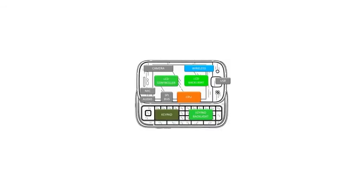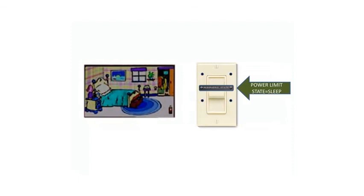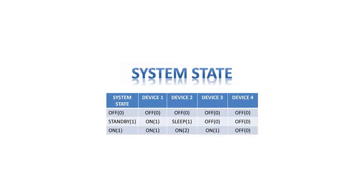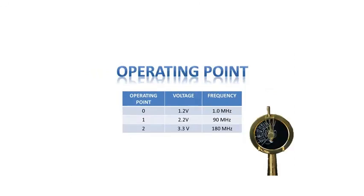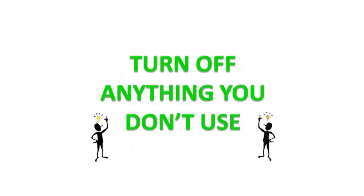To review: device power management is analogous to house power management if we think of each room as an independent device. Each individual device driver manages device power up to the imposed peripheral state limit. A system state is simply a set of peripheral states. An operating point defines the voltage and frequency — the speed of the CPU. The power controller brings it all together by transitioning between system states and operating points, allowing the device to do one thing: turn off anything you don't use. Thank you for watching!